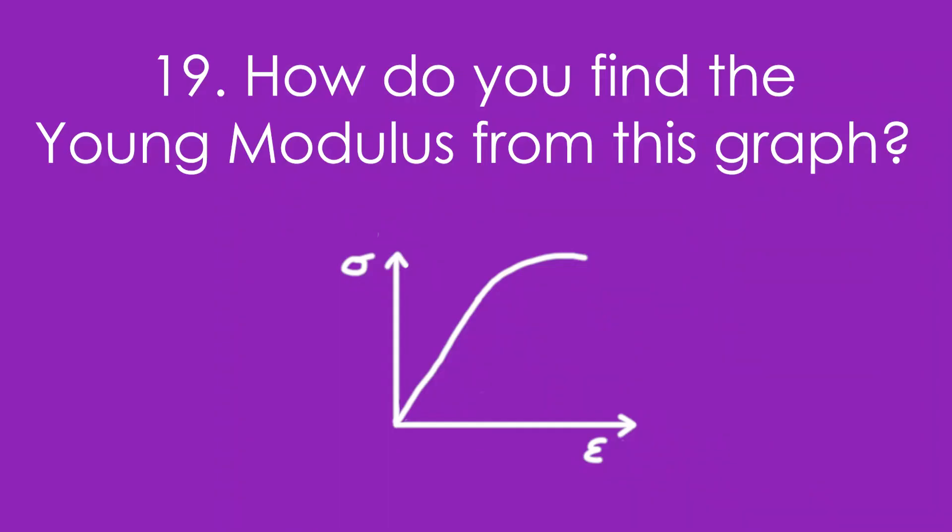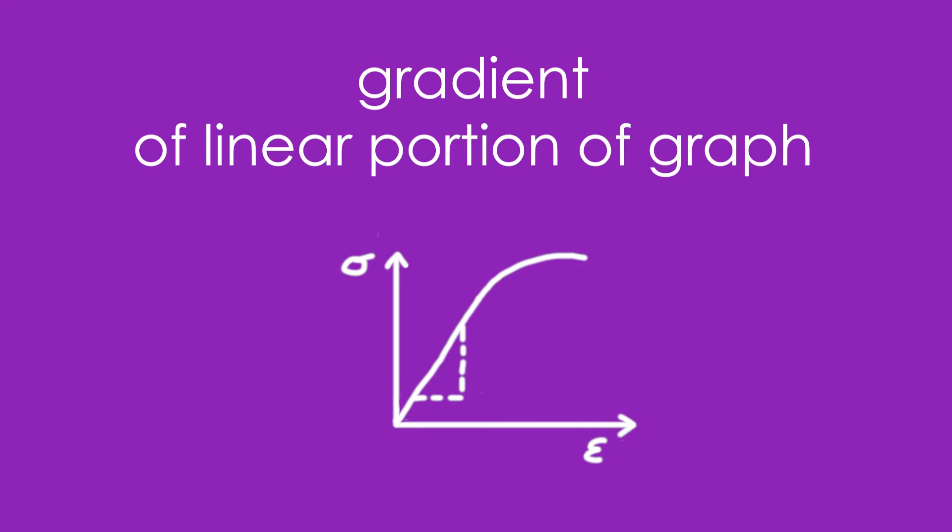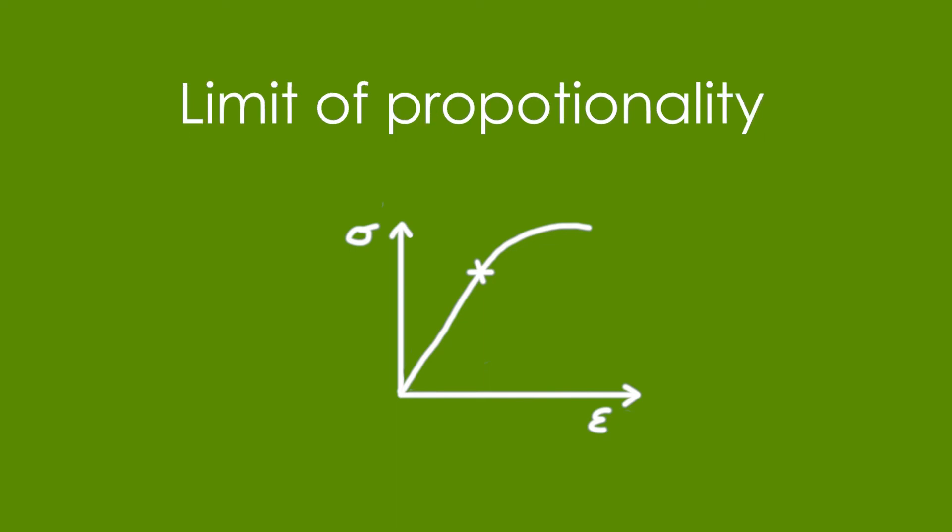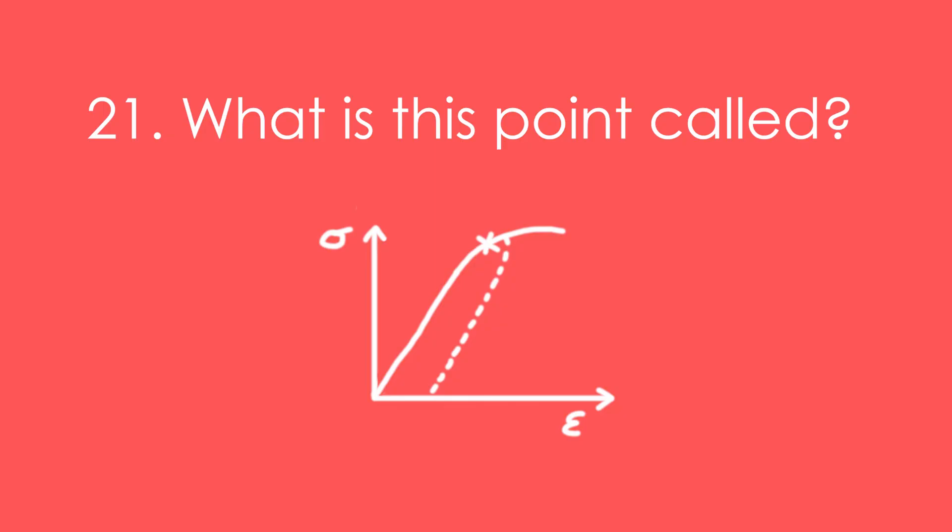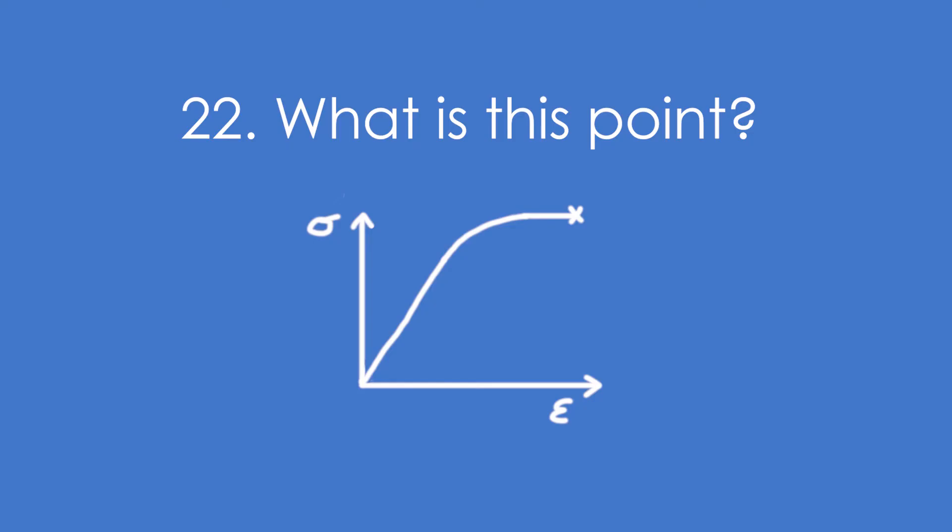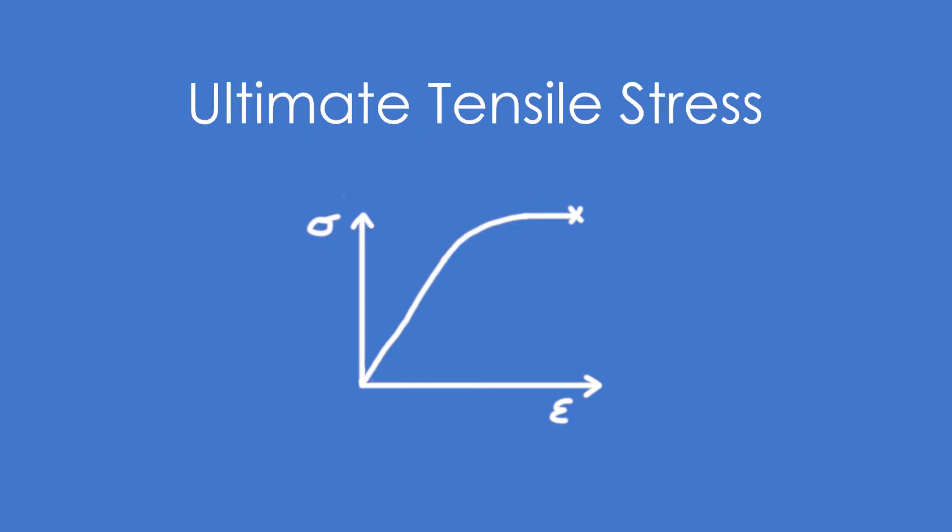Nineteen, how do you find the Young modulus from this graph? It's the gradient, specifically of the linear portion of the graph. Twenty, what is this point called? It's the limit of proportionality. Twenty-one, what is this point called? It's the elastic limit, and we can see that because if we stretch the material just past that point, it's not going to return to its original length. Twenty-two, what is this point called? It's the ultimate tensile stress. Just remember that it doesn't necessarily have to be right at the end of the graph, but it is the highest point.